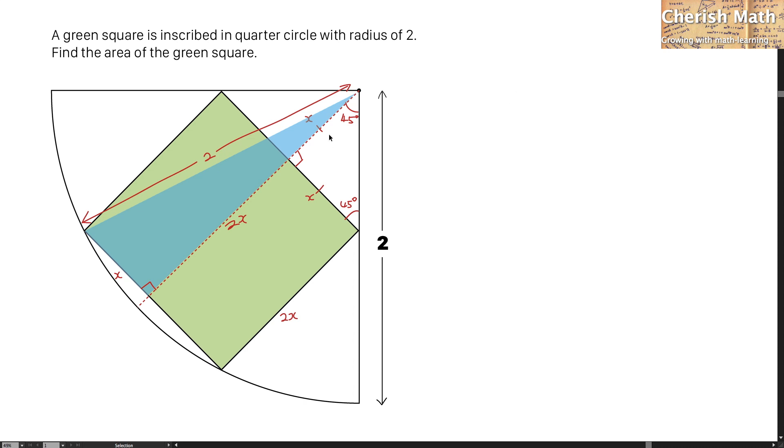I am now going to work out the value of x based on this blue triangle through Pythagorean theorem. This is the equation, expanding it. And now, the value of x squared is 2 fifths.